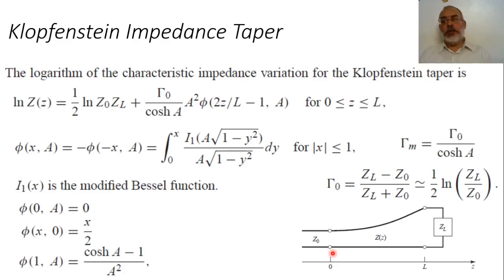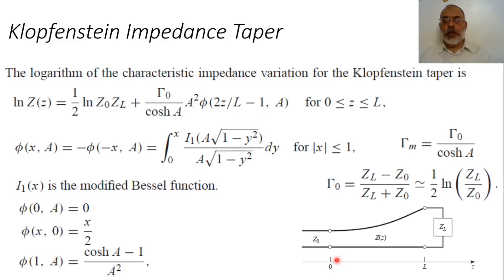The question now is: what will be the optimum tapered section distribution which will introduce zero reflection coefficient at the smallest normalized length (length over lambda)? In addition, it will introduce the minimum — or at least constant — reflection coefficient at frequencies higher than the frequency which corresponds to the minimum length.